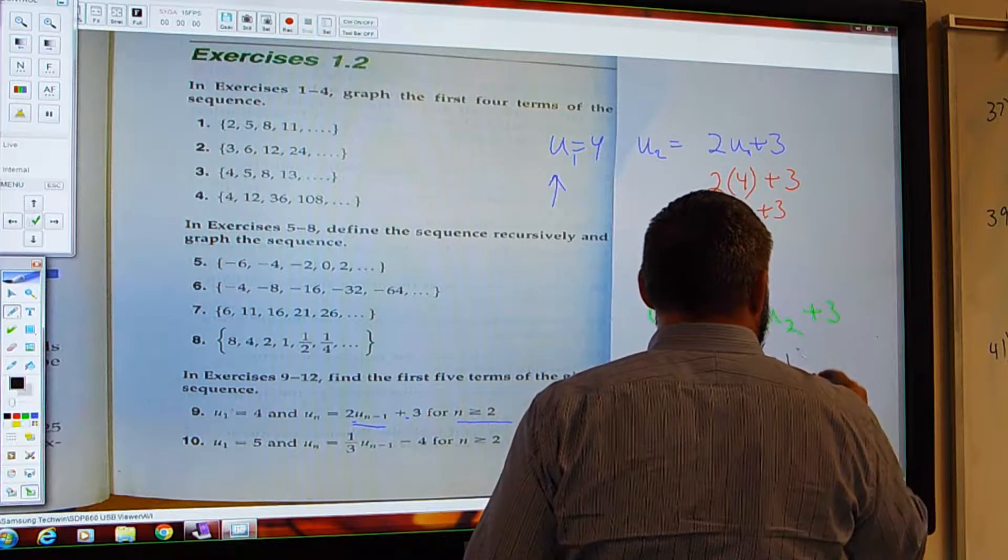Now, what's the first N you get to start with? 2, right? So when you plug in 2 for N, what is 2 minus 1? 1. Which is U to the 1. Which is 4, right? But what is U sub 2? U sub 2 is 2U plus 3, right?